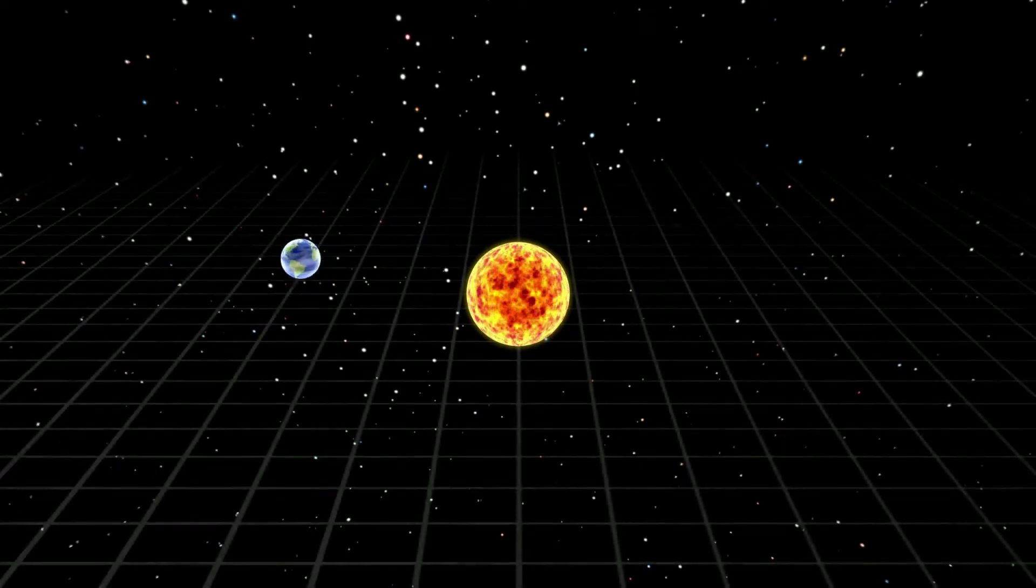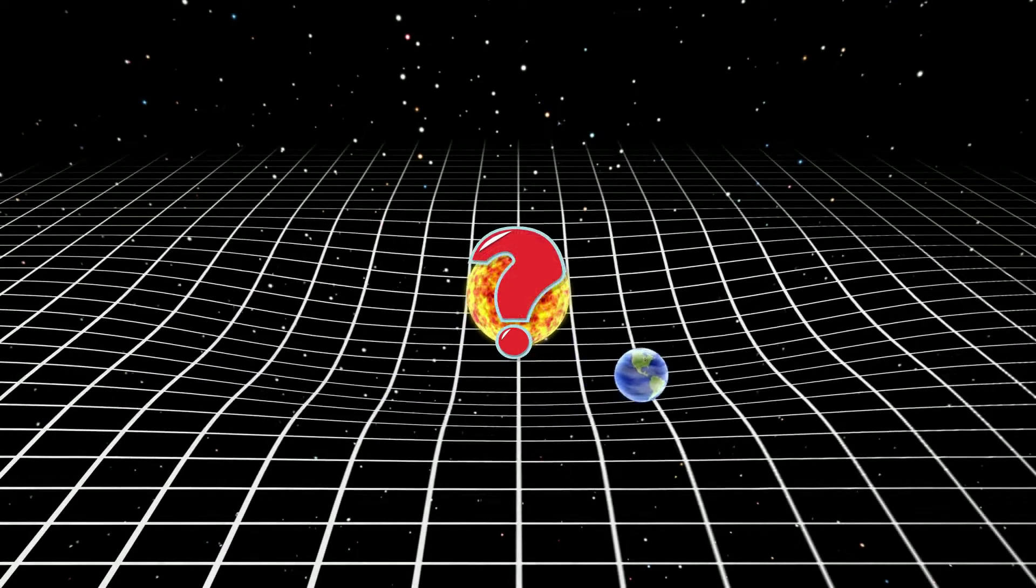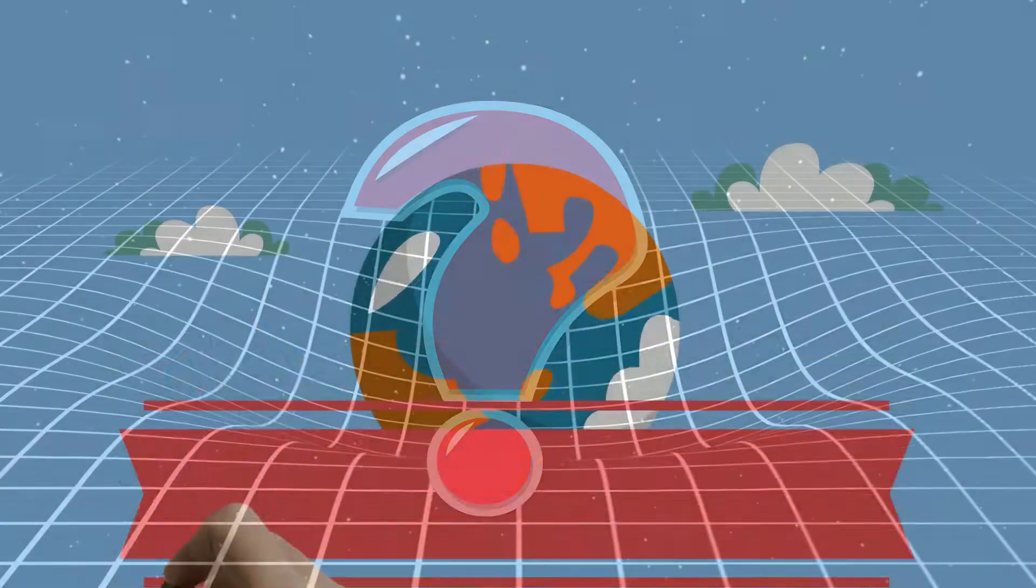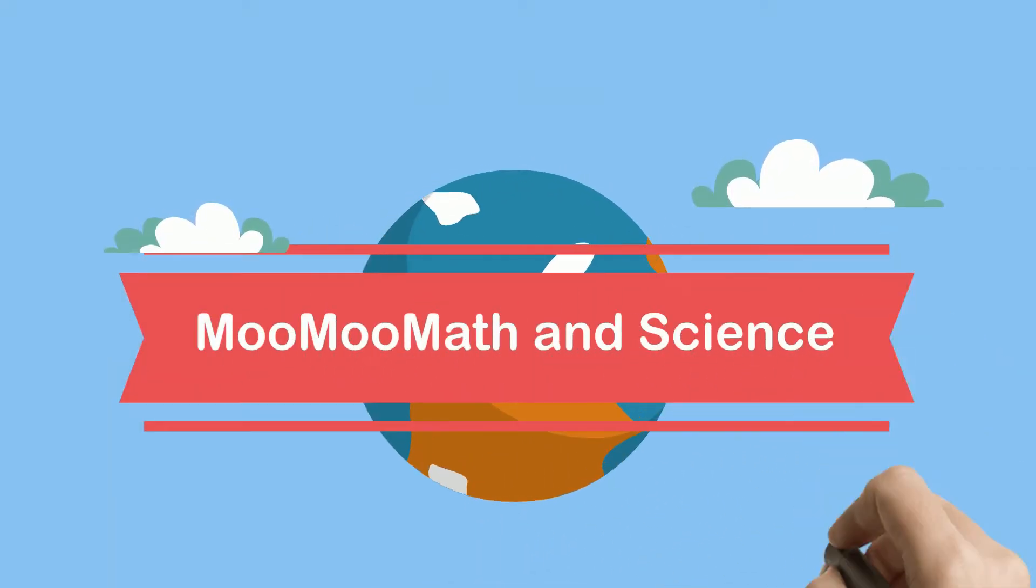Are you aware that there are actually three methods for measuring how long it takes for the Earth to revolve around the Sun? Welcome to Mubomath and Science in the orbit of the Earth.